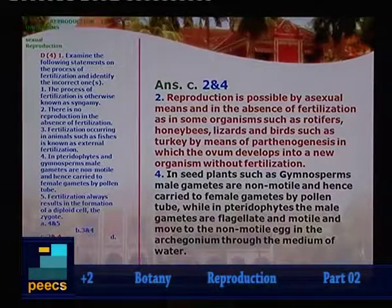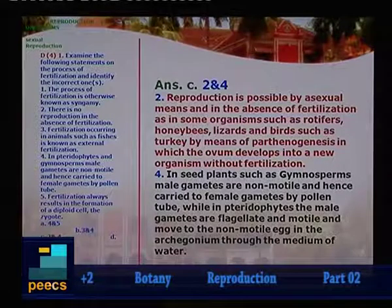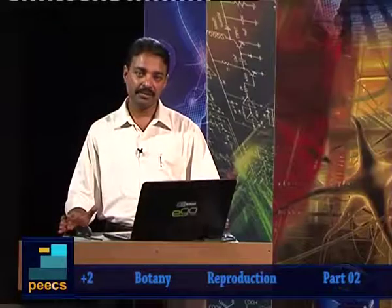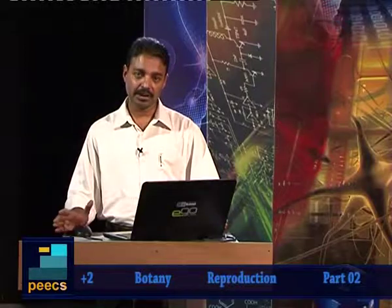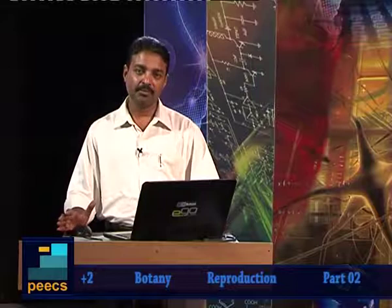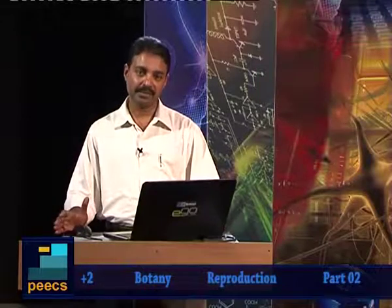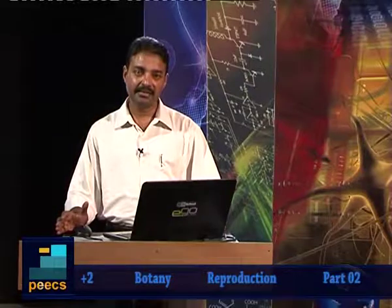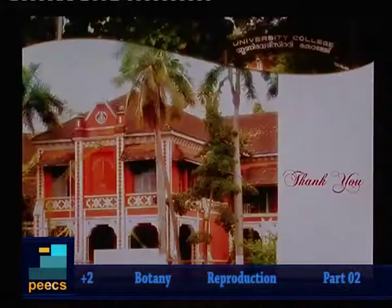So, now you have a clear picture of the entire spectrum of reproduction — on one side there is asexual, on the other side there is sexual. They are fundamentally different in mode and also in development. In the next class, we will study sexual reproduction in detail. Thank you.